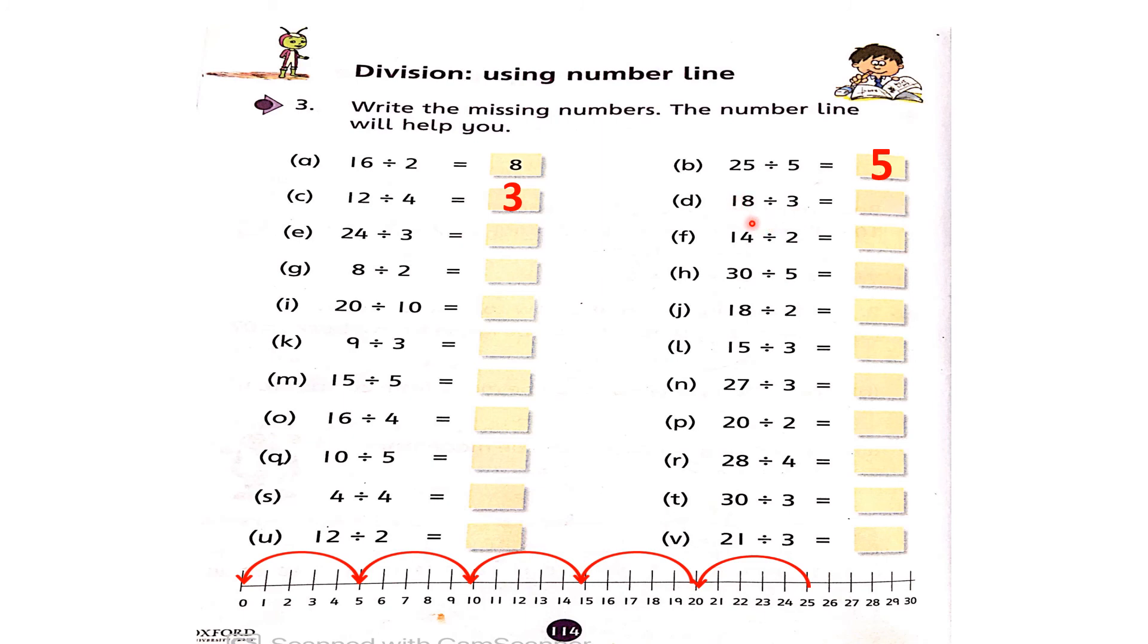Next two questions you will try to solve. Students, now open book page number 140. Write date. Topic is division by using number line. Write the missing number by using number line. There is a number line below. You can see. Part A is already done.